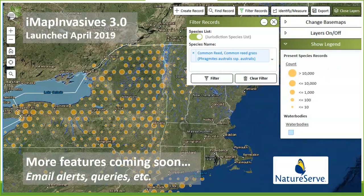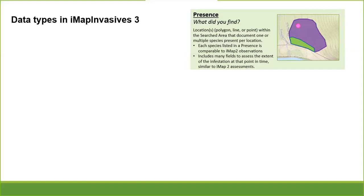With that first webinar, we entered some simple data — a presence record and a not-detected record. Today we're going to launch into some of the more advanced data types, starting with some terminology. The presence record — what you learned earlier this week — is equivalent to our observations and assessments from IMAP all along over the years. You saw an invasive species at a certain point in time at a location. A key difference now is that a presence record can be a polygon, a point, or a line.